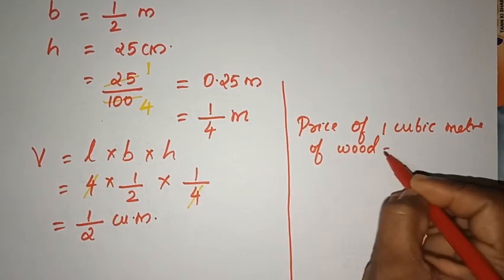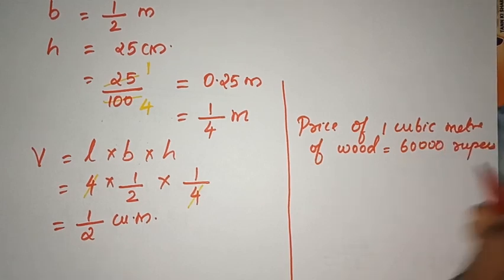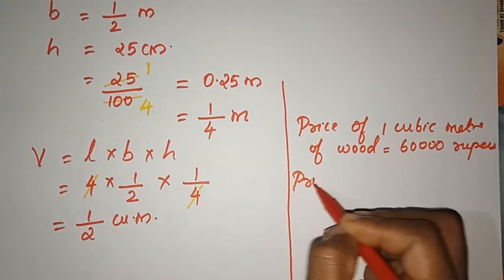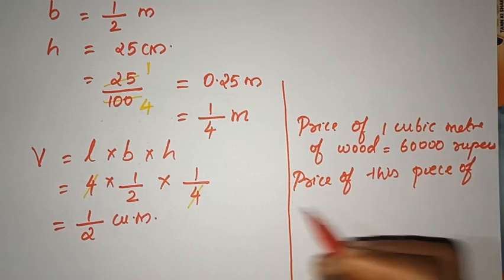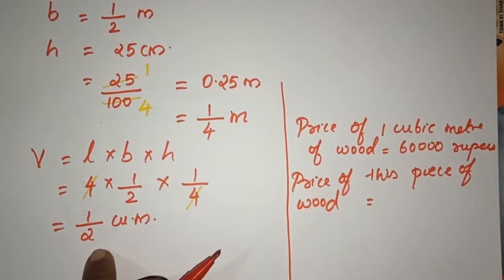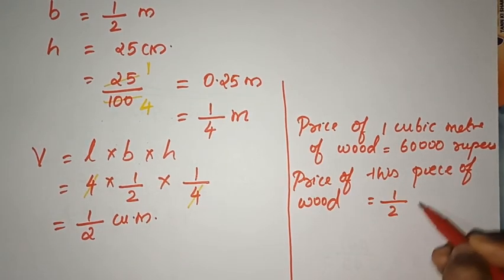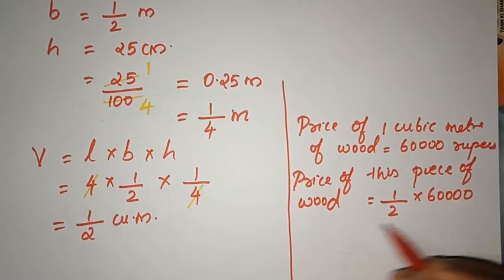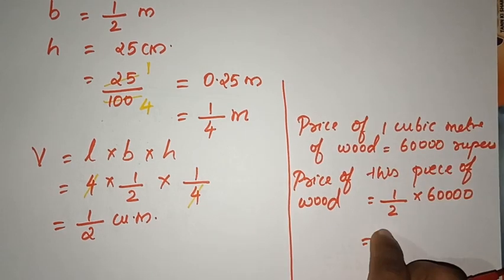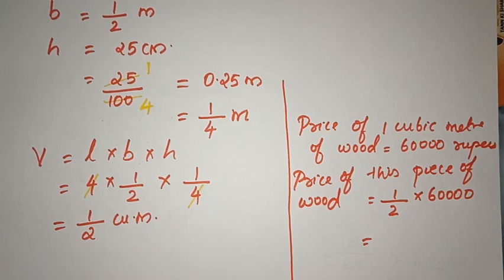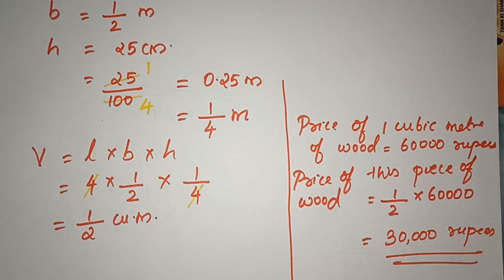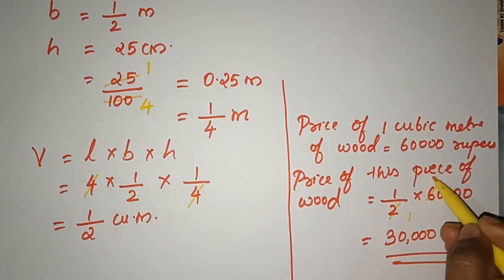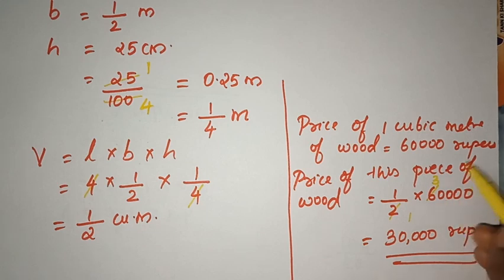The price of 1 cubic meter of wood is 60,000 rupees. The volume of this piece of wood is 1/2 cubic meter. So the price is 1/2 into 60,000, which equals 30,000 rupees.